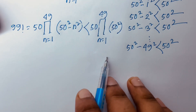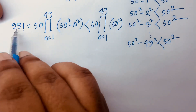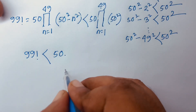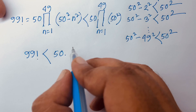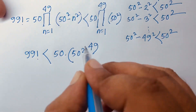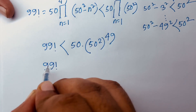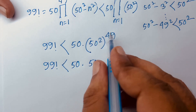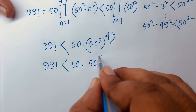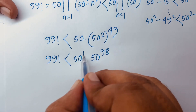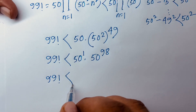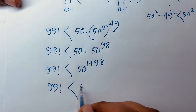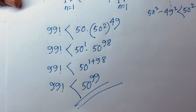Therefore 99 factorial is less than 50 times 50 squared raised to the power 49, which equals 50 times 50 to the power 98, giving us 50 to the power 99. So 99 factorial is less than 50 to the power 99 — that is our bigger number. Thank you all, if you enjoyed this video please subscribe to my channel. Goodbye.